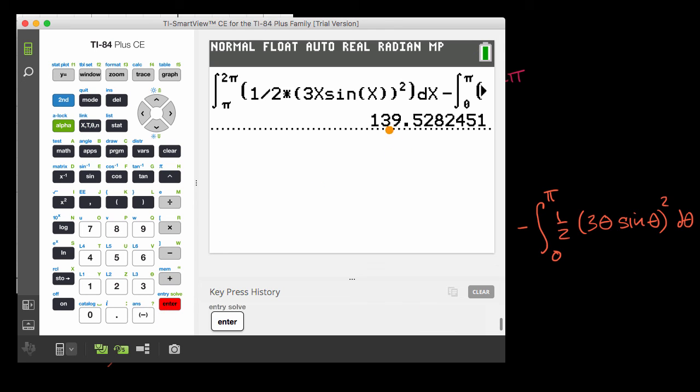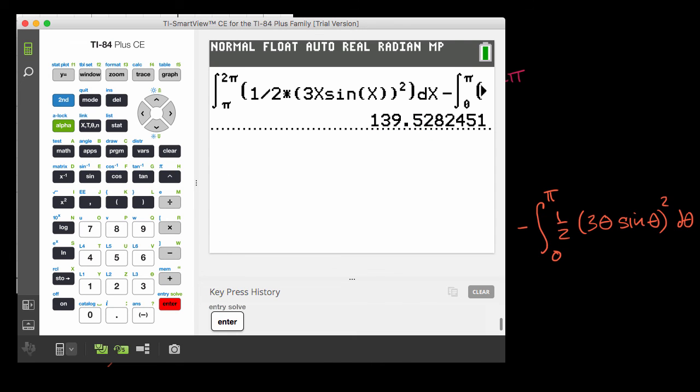And I got 139 point, well let's just go around to the nearest hundredth, .53. So this is approximately 139.53 square units.